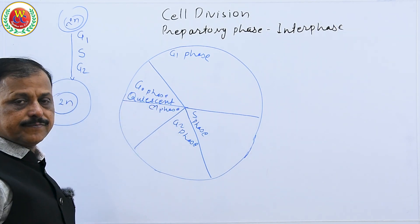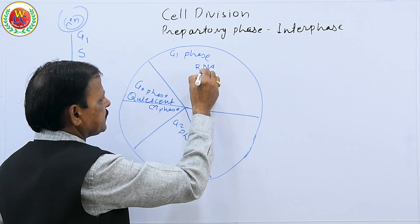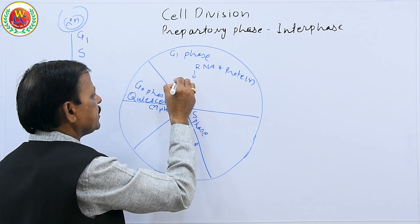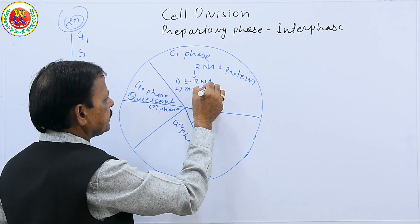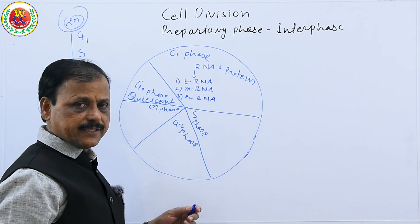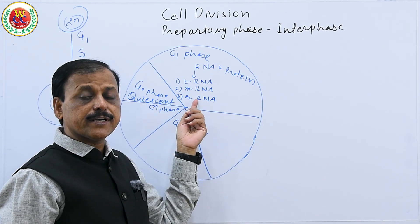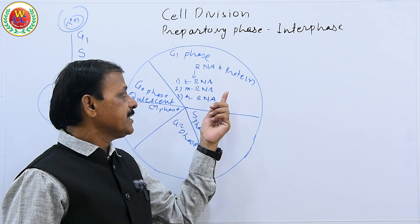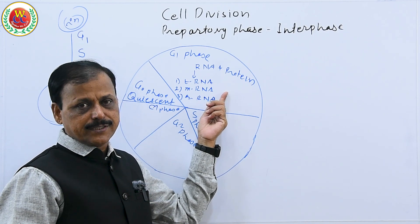In G1 phase, RNA and protein are synthesized. All types of RNA — transfer RNA, messenger RNA, and ribosomal RNA — are synthesized. Importantly, in G1, proteins are also synthesized at the same time. The cell is metabolically active, continuously producing protein through transcription and translation, which are required for various cellular functions.